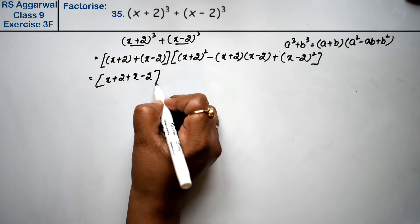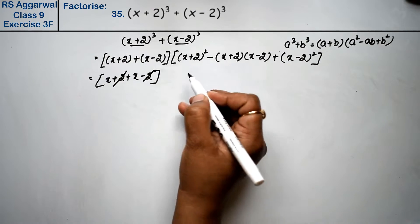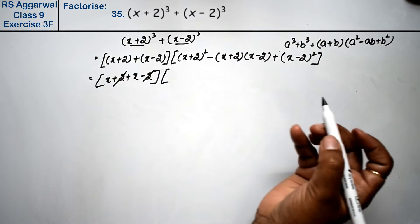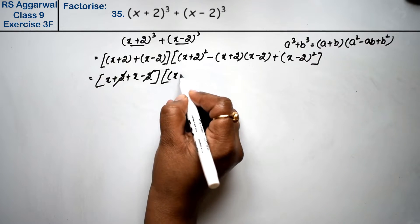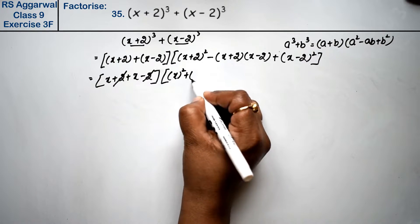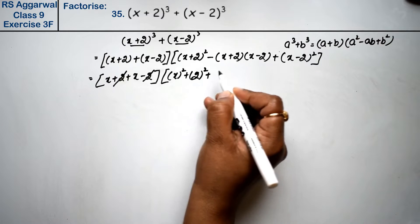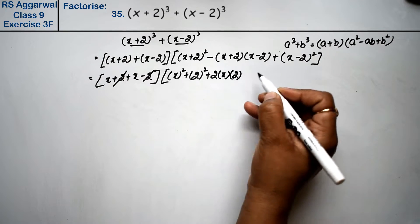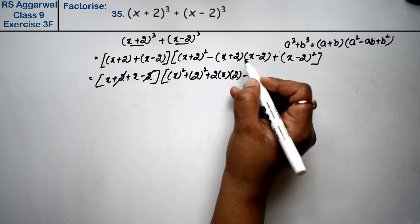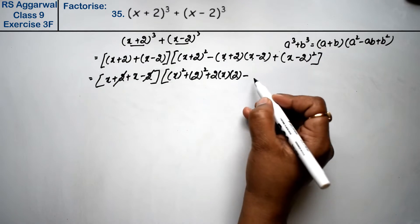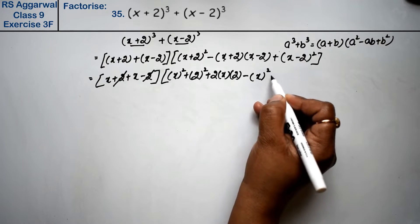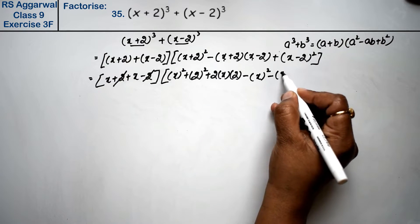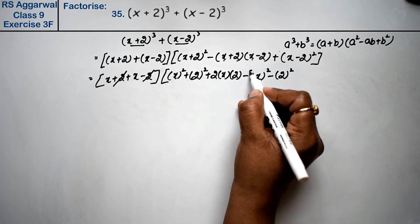Now we open the bracket: (x+2) + (x-2). Plus and minus 2 cancel out, leaving 2x. Using the formulas: a²+b²+2ab for the squared term, and a²-b² for the middle term.